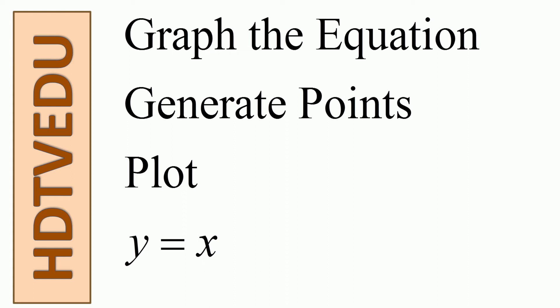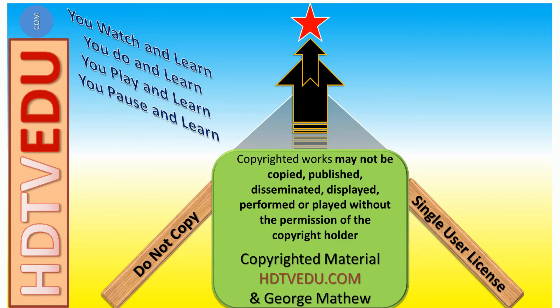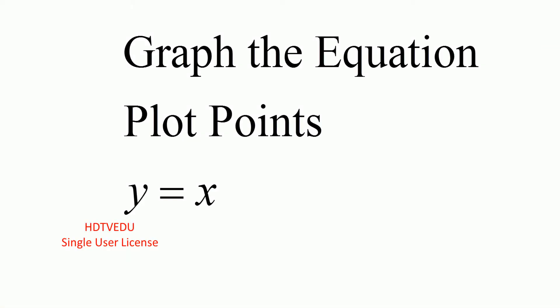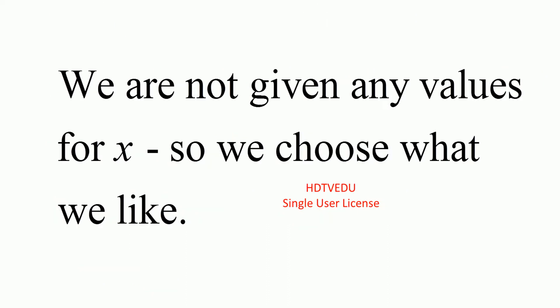Graph the equation, generate points, plot y is equal to x. We need ordered pairs. An ordered pair makes a point on the graph. A point on the graph has x and y. We are not given any values for x, so what do we do? We choose what we like.